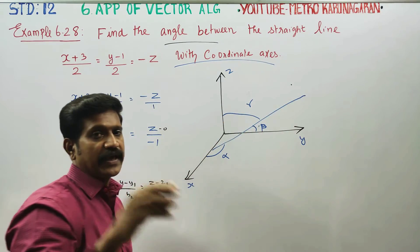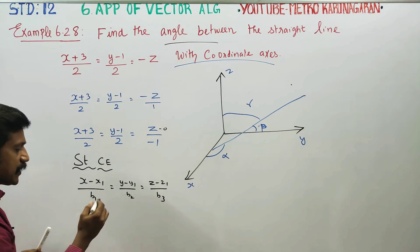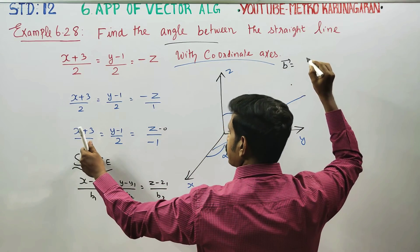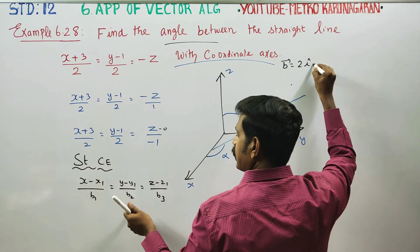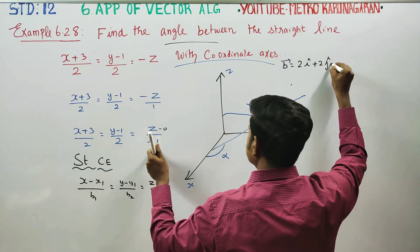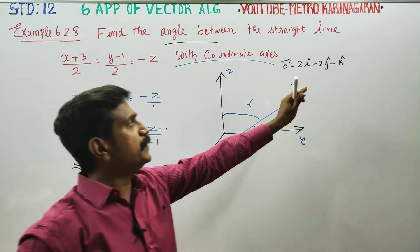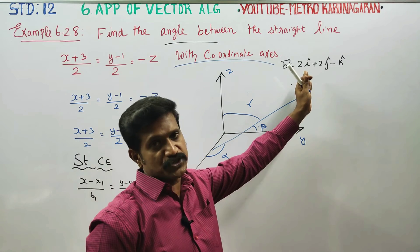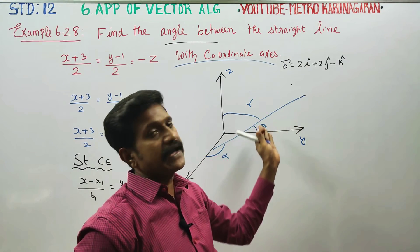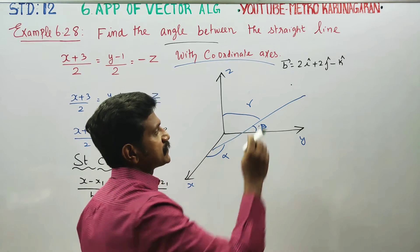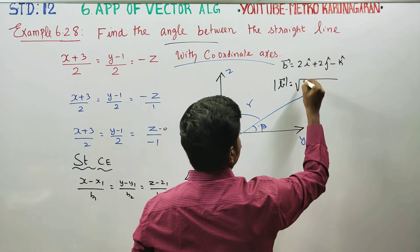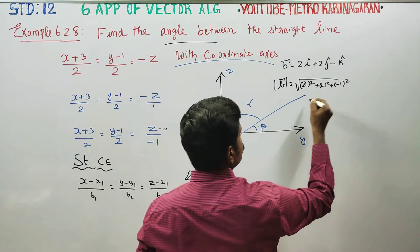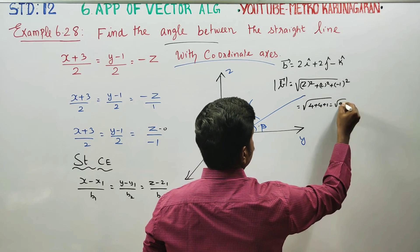The b vector has components: b1 = 2i, b2 = 2j, b3 = -1. These are the direction ratios, and they are proportional. The magnitude of b vector is the square root of 2 squared plus 2 squared plus 1 squared, which equals root of 4 plus 4 plus 1 = root 9 = 3.